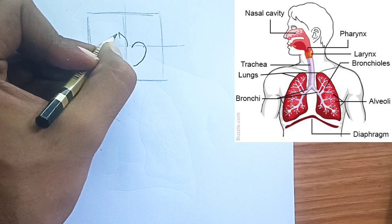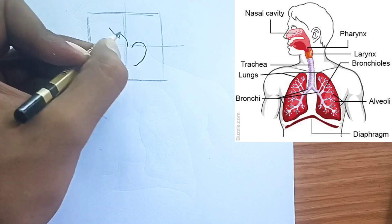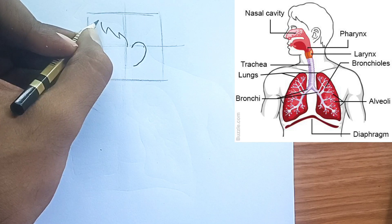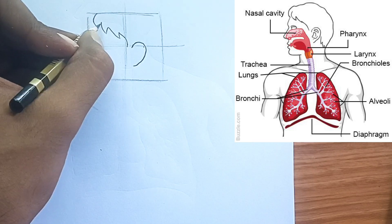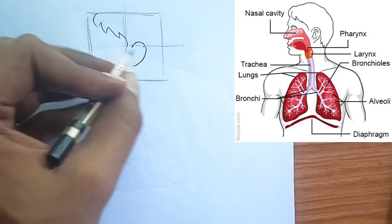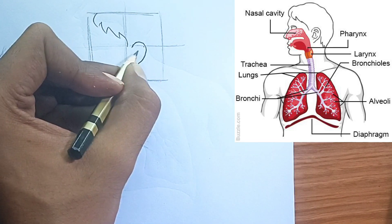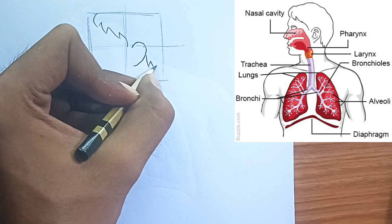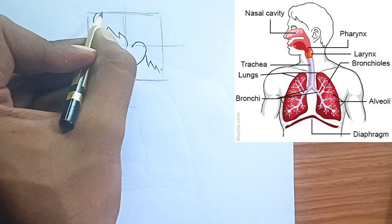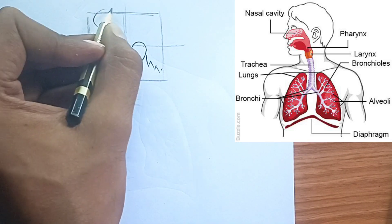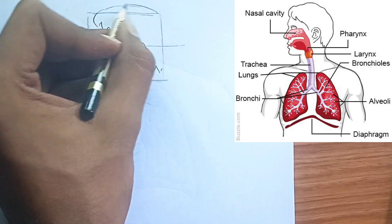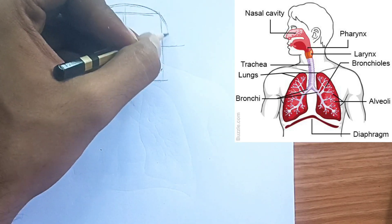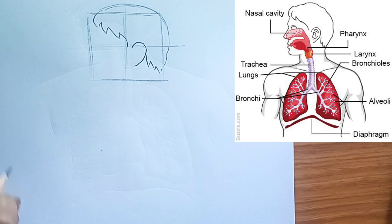The Journey of Air. Air typically enters through your nostrils, where tiny hairs and a sticky mucus lining trap dust and other particles. The air is also warmed and moistened here. You can also breathe through your mouth, especially during strenuous activity or when your nasal passages are blocked.